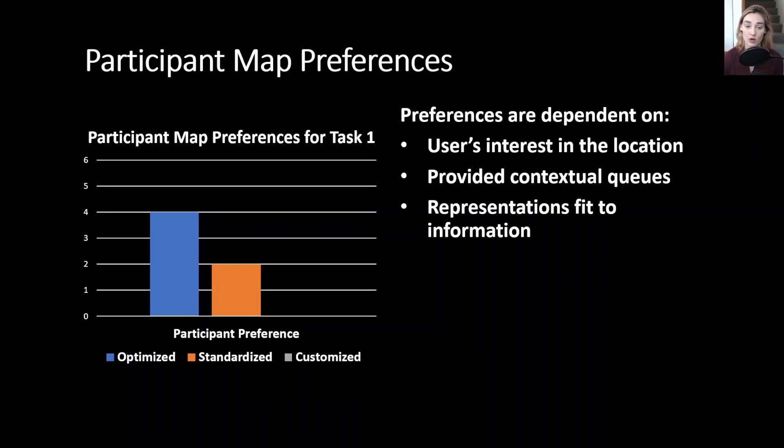Based on task one, we found that participants overall prefer the optimized maps over the customized and standardized maps. Only two participants preferred the standardized maps, and no participants preferred the customized maps, which was surprising to us because we had expected the customized maps to perform better.